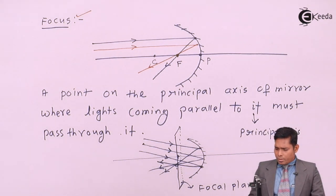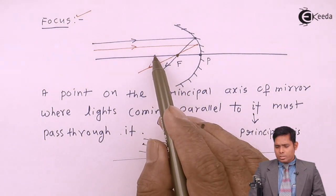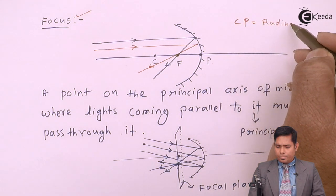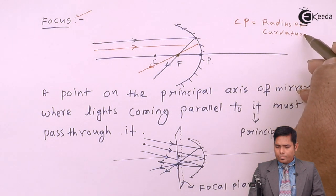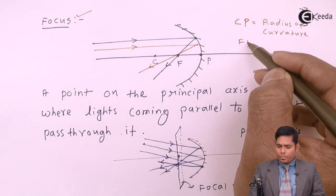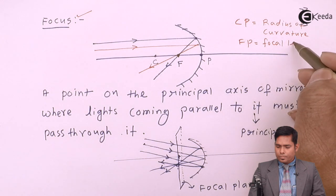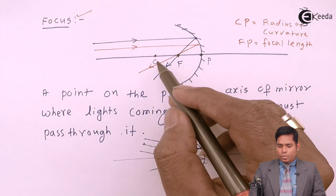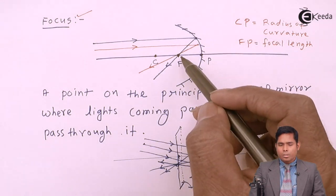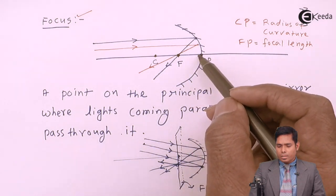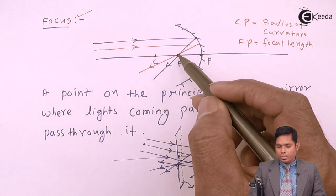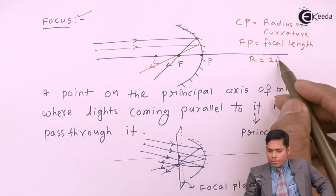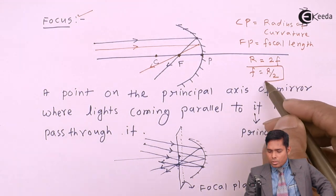In terms of distances, the distance CP is the radius of curvature R, and the distance FP is the focal length. Point C is the center of curvature, point F is the focus, and point P is the pole. The distance between the center of curvature and pole is the radius of curvature, and the distance between focus and pole is the focal length. These two distances are related: R equals twice F, or F equals R divided by 2.